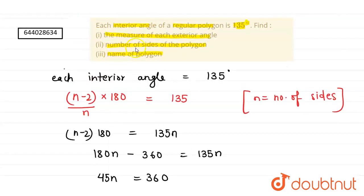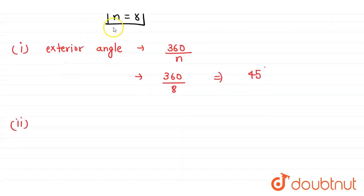Now the second part asked is number of sides of the polygon. We have found out the number of sides is 8.